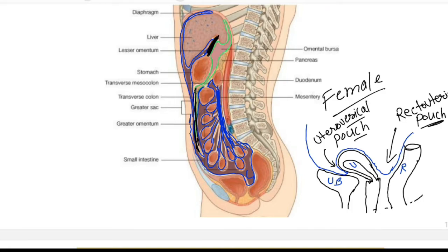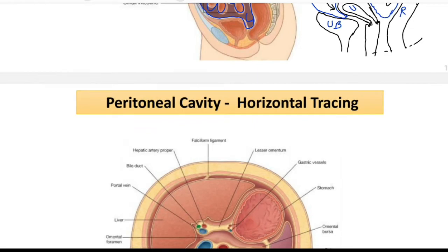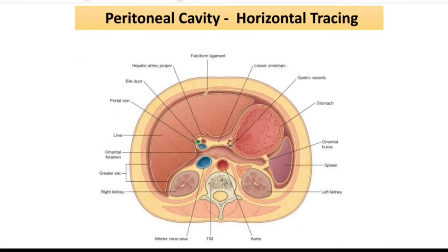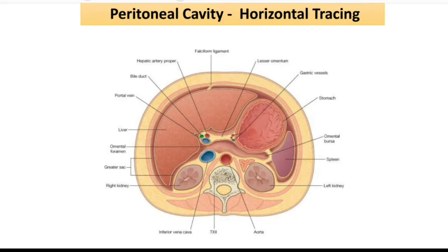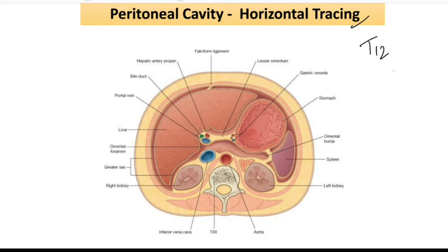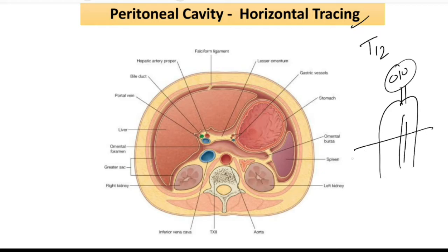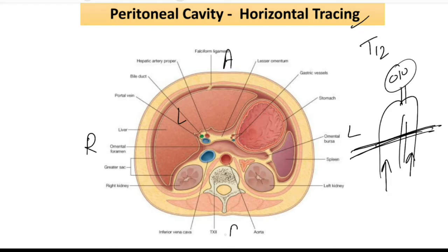Now we are moving toward the horizontal tracing. In the horizontal section, we have taken the section at T12. You are seeing this picture from below — suppose a person is there and we have taken a section like this, and you are seeing from the inferior side. That is why you see the liver on the right side; this is the right side, this is the left side, this is the anterior side, and this is the posterior side.